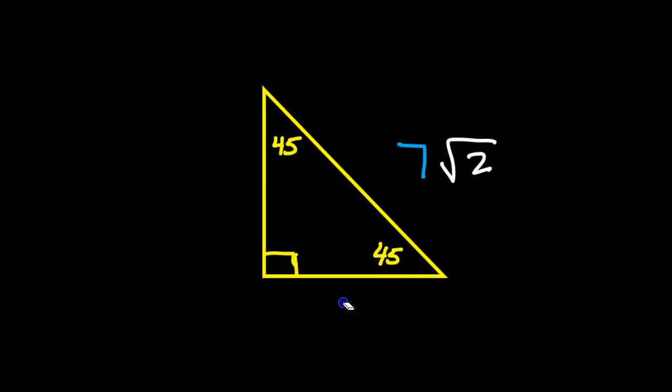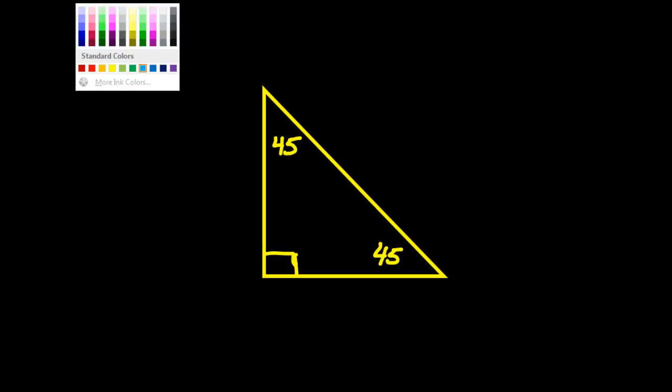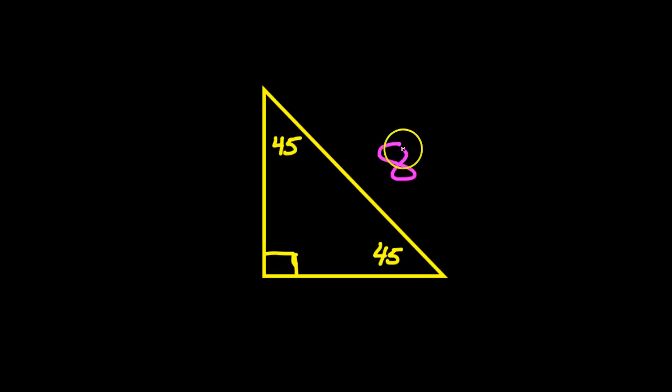But Jessica's question is this: What if they tell you that the hypotenuse is eight radical three? All right, radical three has nothing to do with a 45-45-90 triangle. So what if they threw this in here?